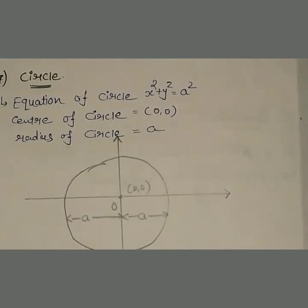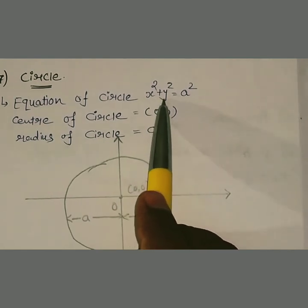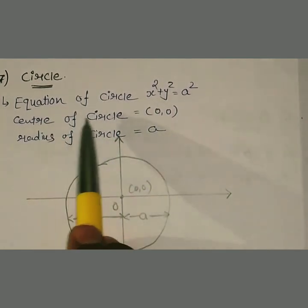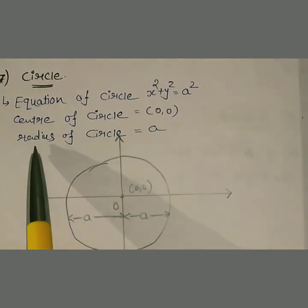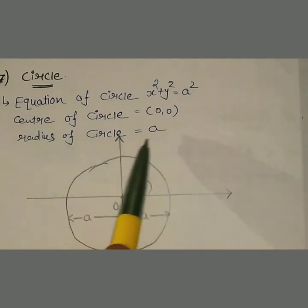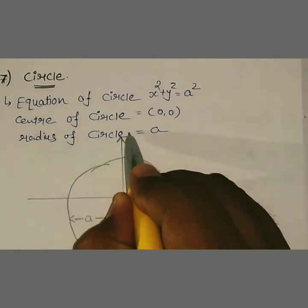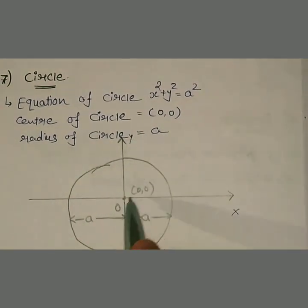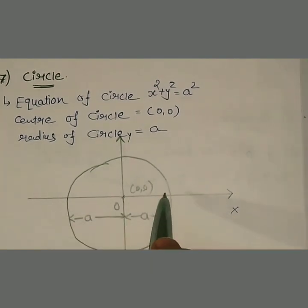Next graph: Circle। Circle का general equation है x² + y² = a²। Circle का center होता है (0, 0) — क्योंकि circle two-dimensional है — and the radius is a। यहाँ पर circle दिखाया गया है, x-axis और y-axis है, origin (0,0) है। Circle से इस वाली distance 'a', circle से उस वाली distance 'a' — so that is your radius।